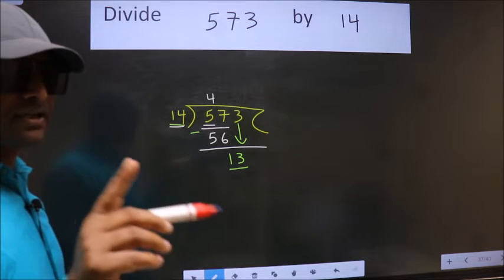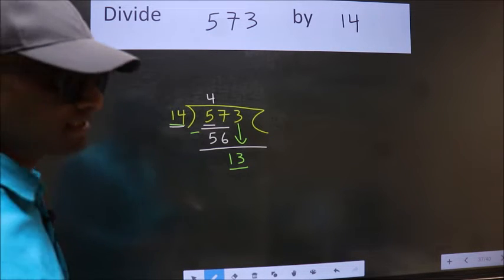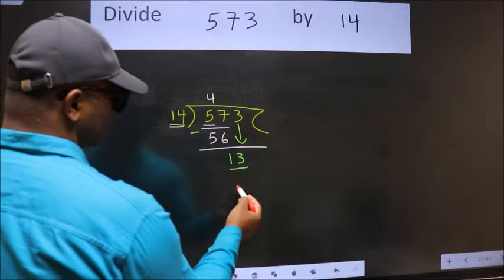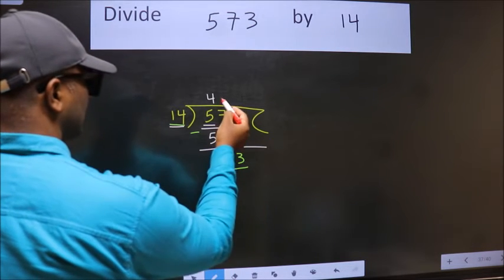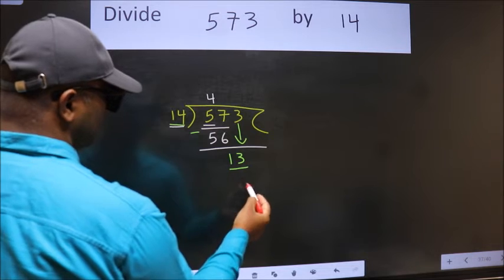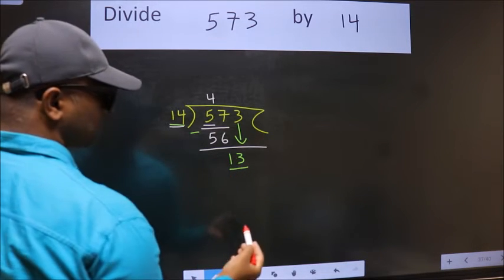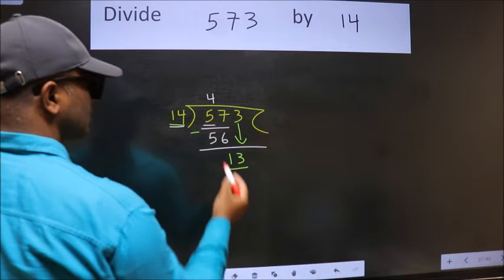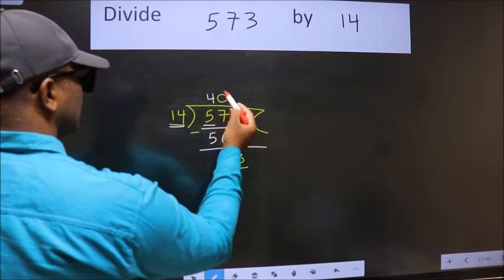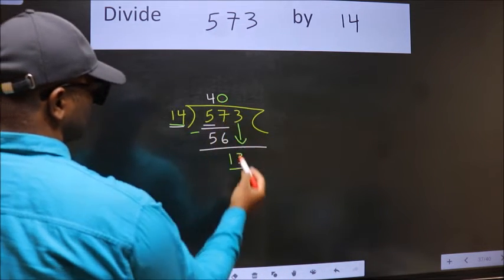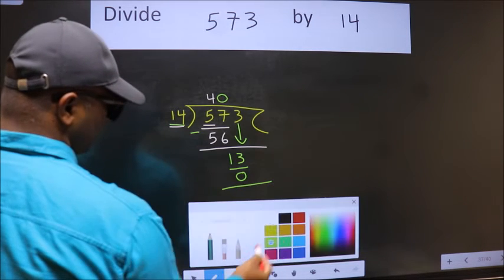Instead of that, what we should think of doing is, which number should we take here? If I take 1, we will get 14, but 14 is larger than 13. So what we do is we take 0 here. So 14 into 0, 0.